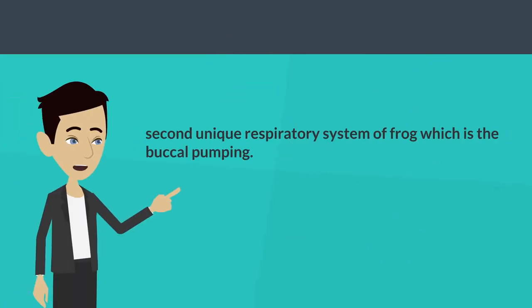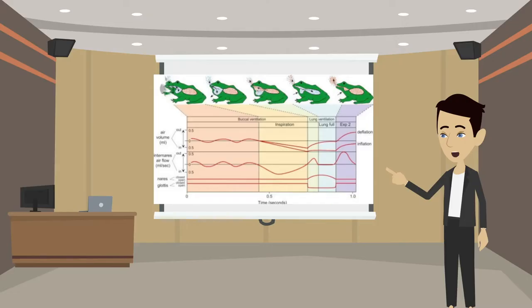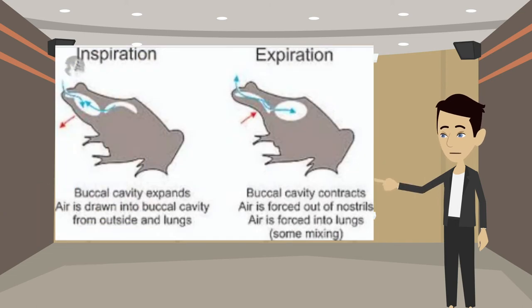Now let's move on to the second unique respiratory system of frog, which is the buccal pumping. This is a process where the frog pumps air in and out of its mouth using its hyoid muscles. This method is used to extract oxygen from the air and is used when the frog is sitting still, or when it's not able to breathe through its skin.